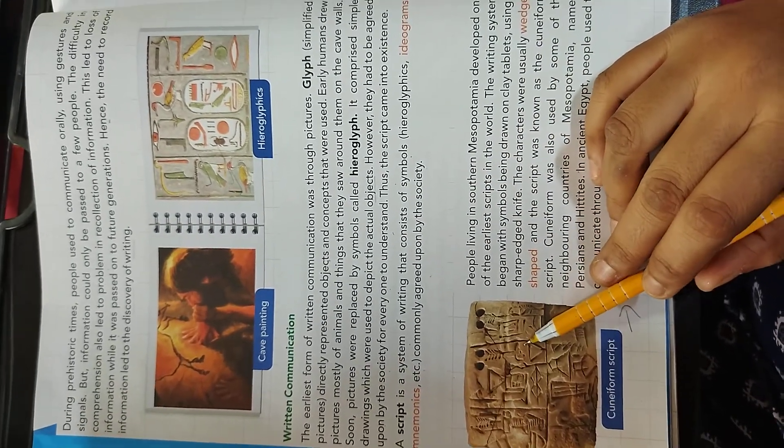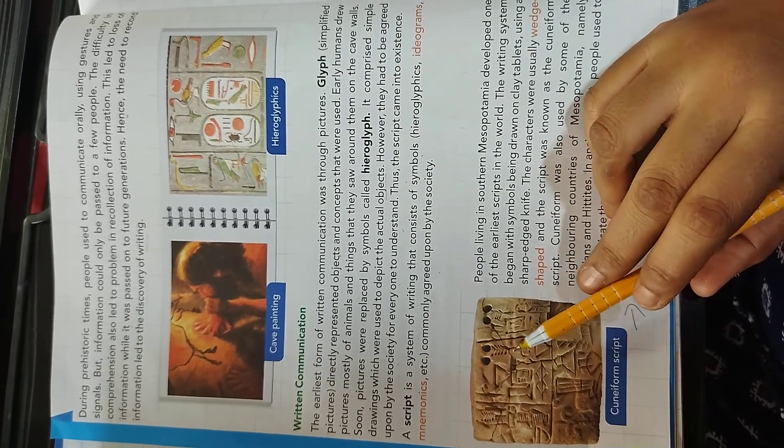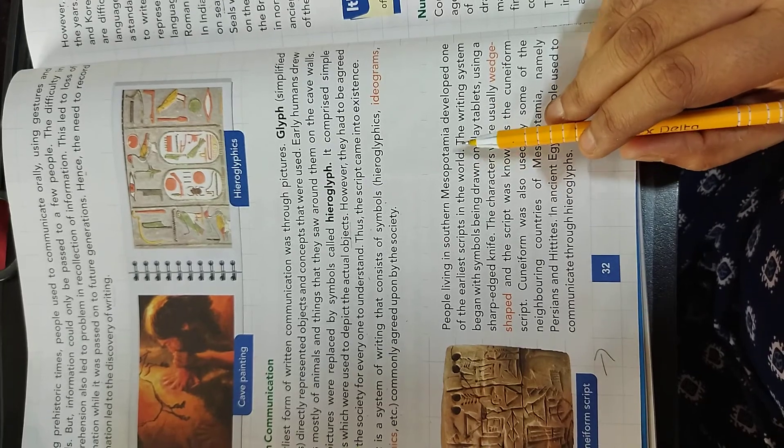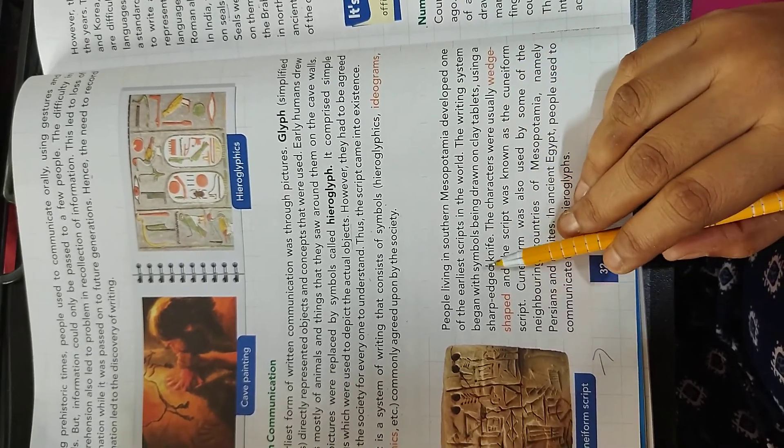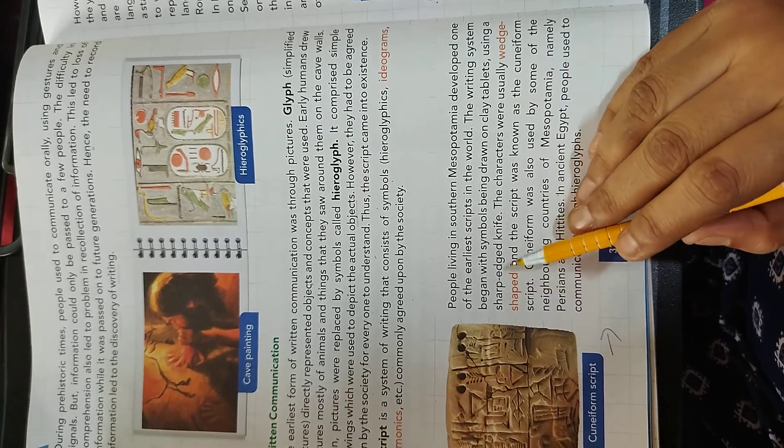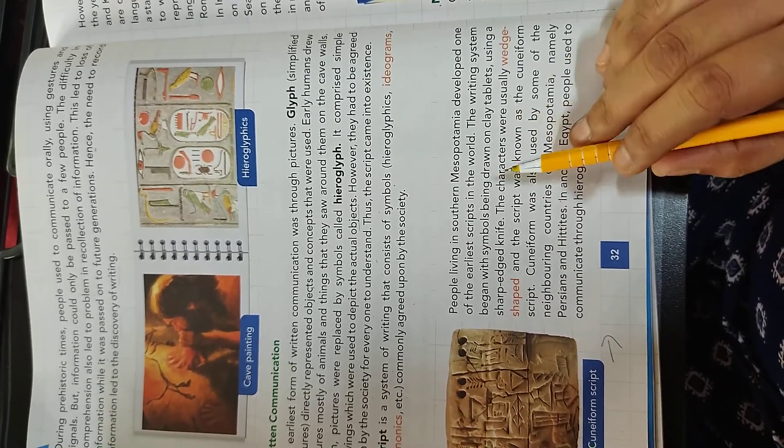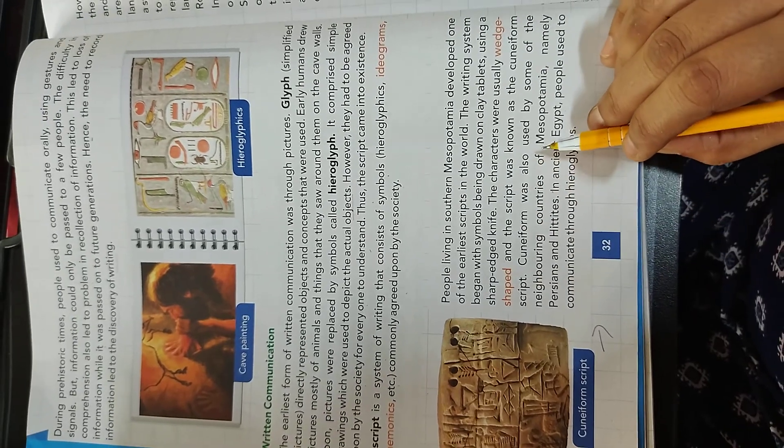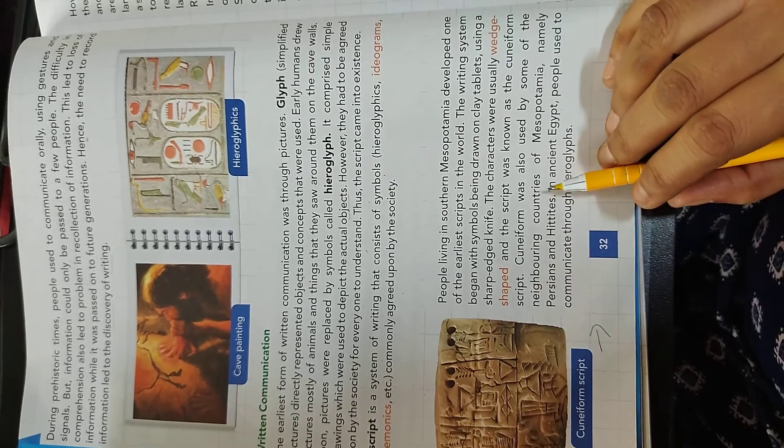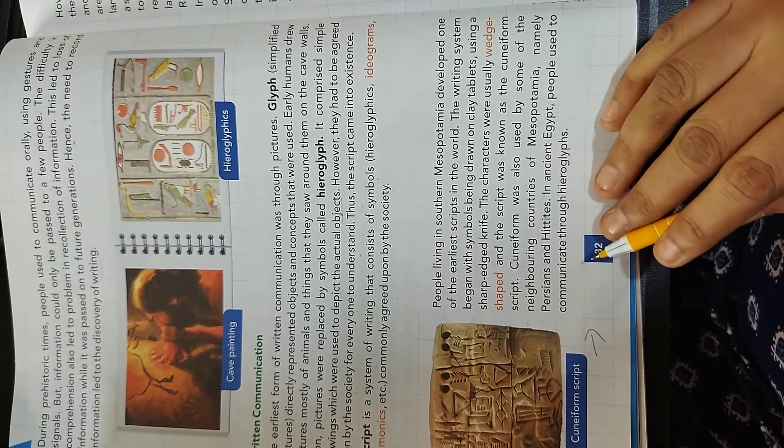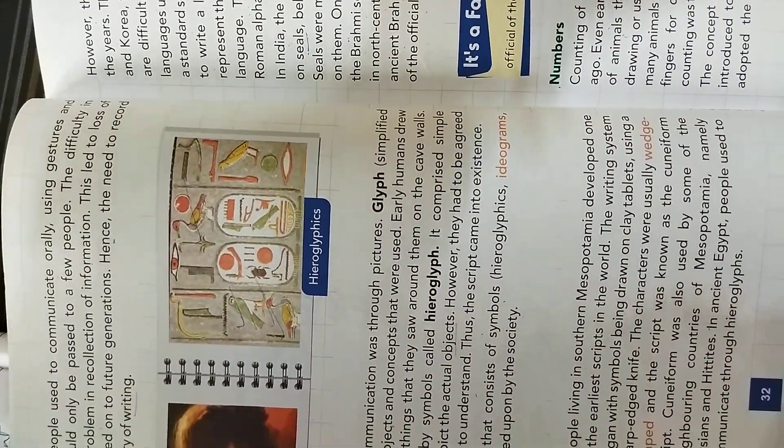This is the picture of cuneiform script. People living in southern Mesopotamia developed one of the earliest scripts in the world. The writing system began with symbol being drawn on clay tablets. They used clay on that time using a sharp edged knife. The characters were usually wedge shaped and the script was known as the cuneiform script. Cuneiform was also used by some of the neighboring countries of Mesopotamia, namely Persians and Hittites. In ancient Egypt, people used to communicate through hieroglyphics.